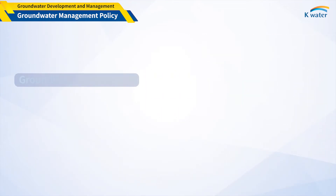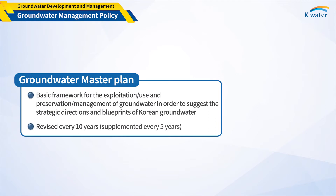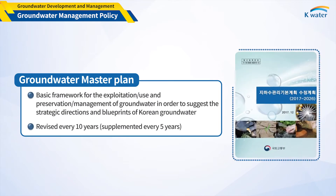The Ministry of Environment, the current management agency of groundwater in Korea, establishes a master plan for groundwater management every 10 years, and supplements it every 5 years if necessary. The master management plan includes the development, utilization, conservation, and management of groundwater.